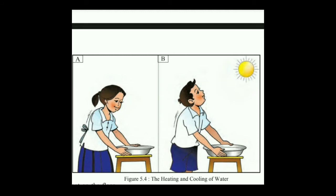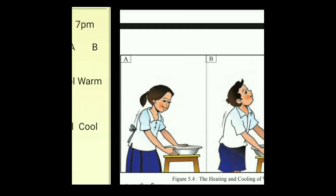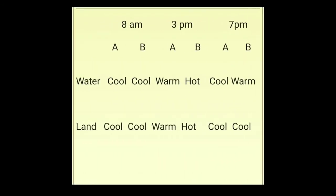Now what do you observe? You must have realized that the land cools down earlier than water. Let us see what our observations were. You can see the table here where A is the pot kept inside and B is the pot kept outside. So A means inside and B means outside the house.